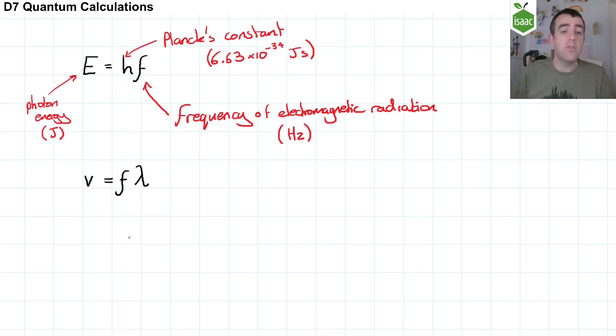Another useful equation is the general equation for waves, where the wave speed, V, is measured in metres per second. If this is electromagnetic radiation, we can replace the wave speed, V, with the speed of light, C.